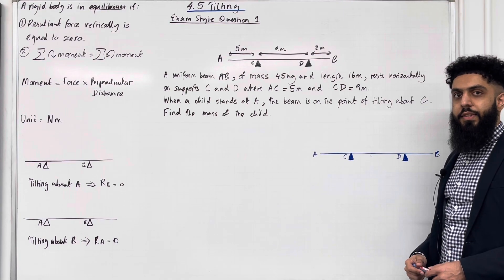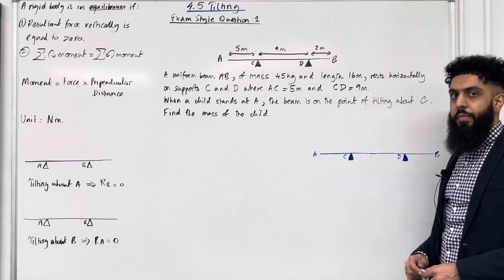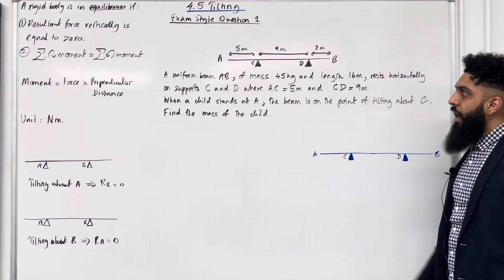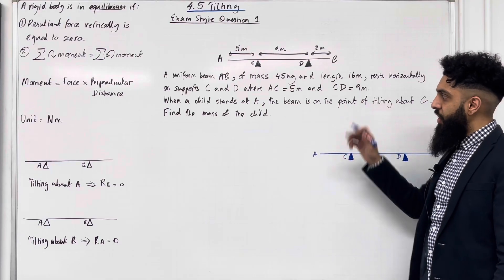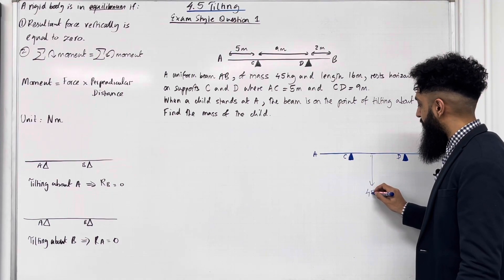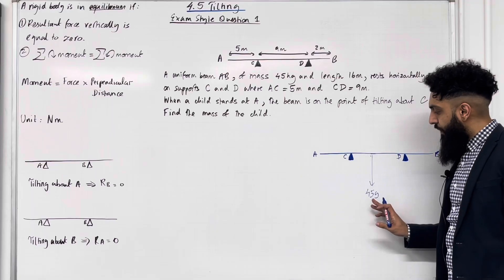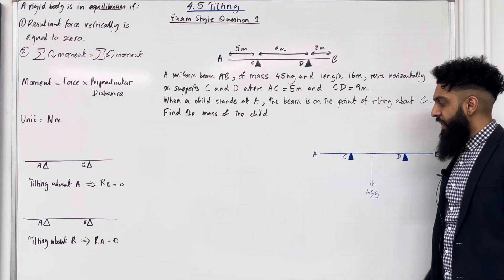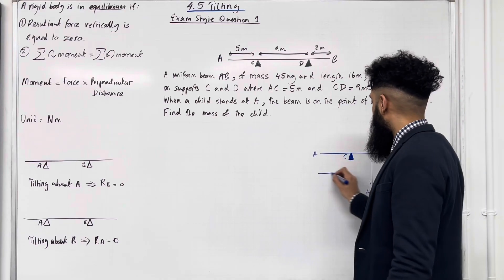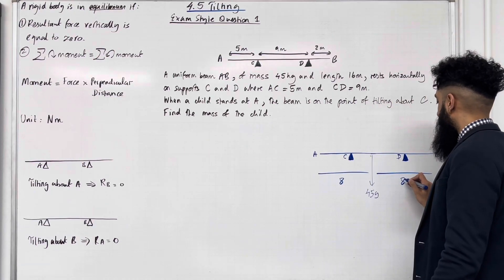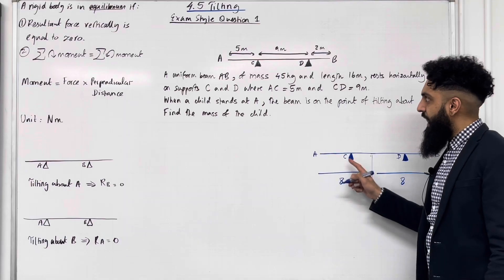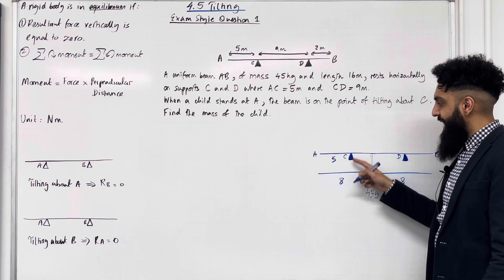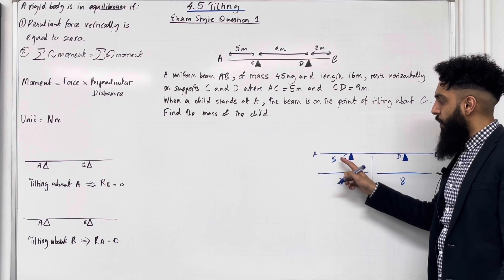I'm going to start by labelling all the forces that act on this uniform beam. The beam is modelled to be uniform, hence the weight acts at the centre. The mass of the beam is 45 kg, so the weight is 45g acting at the centre. That 45g splits the entire 16 metres into two equal parts — 8 metres each side. The distance A to C is 5 metres, so the distance from support C to the centre of mass is 8 minus 5, which is 3 metres.